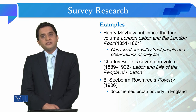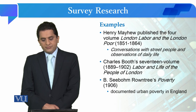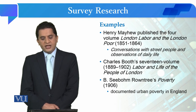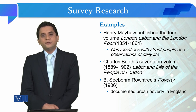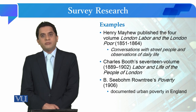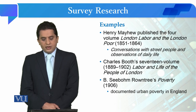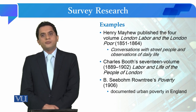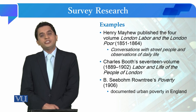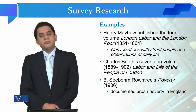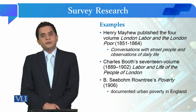The second example is Charles Booth's book on labour and life of the peoples of London, published from 1889 to 1902. The third example is B. Seebohm Rowntree's book on poverty, published in 1906, which documented urban poverty in England.